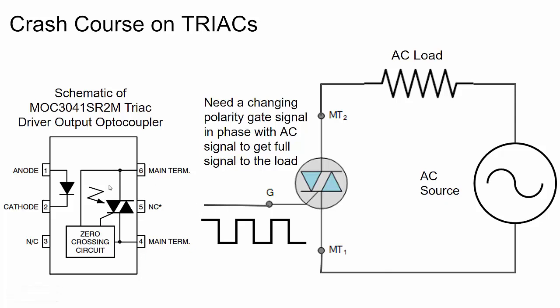There are two conditions for this circuit to work. First, the LED must be on — if the LED is not on, the triac gate will not be driven. If the LED is on, then the zero crossing circuit becomes effective, leveraging a small signal from the main AC signal to control the triac so it acts like a closed switch and passes the full AC waveform.